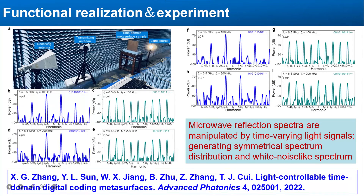Our spectrum test experiments were carried out in a microwave chamber, as shown in figure A. A focused light source is used to provide time-variant light signals for illuminating the metasurface. The light-controllable time domain metasurface is illuminated by light signals with two pre-designed time-coding sequences. The measured results show that the metasurface can well generate symmetrical harmonics and white noise-like spectra, respectively, as seen in figures B to I.